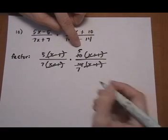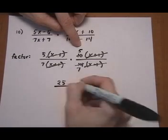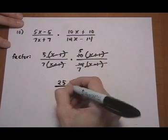We're left with 5 times 5, 25, over 7 times 7, 49.